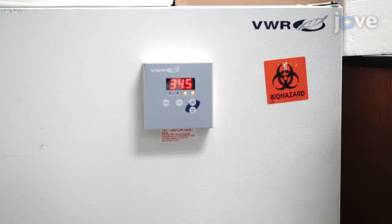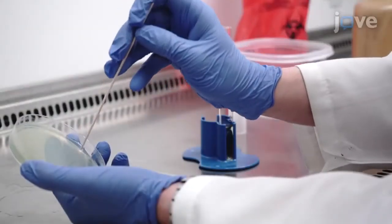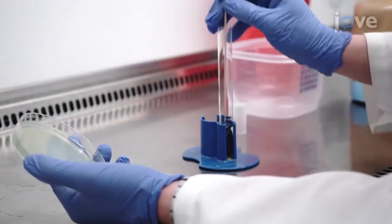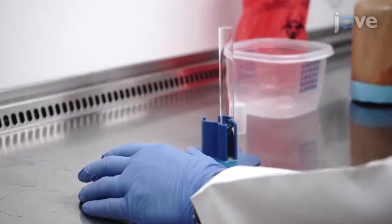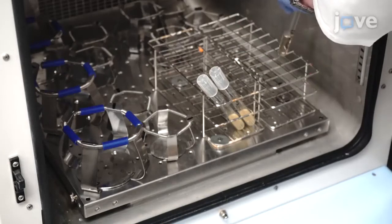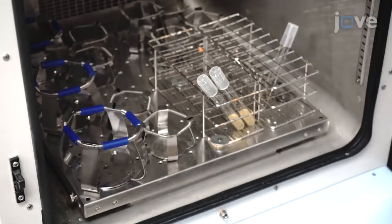Then store the plate at 4 degrees Celsius for up to one week. Two days prior to setting up assay plates, use a single colony from the plate to inoculate 3 to 5 milliliters of sterile LB broth. Incubate the culture at 37 degrees Celsius for 12 to 16 hours.